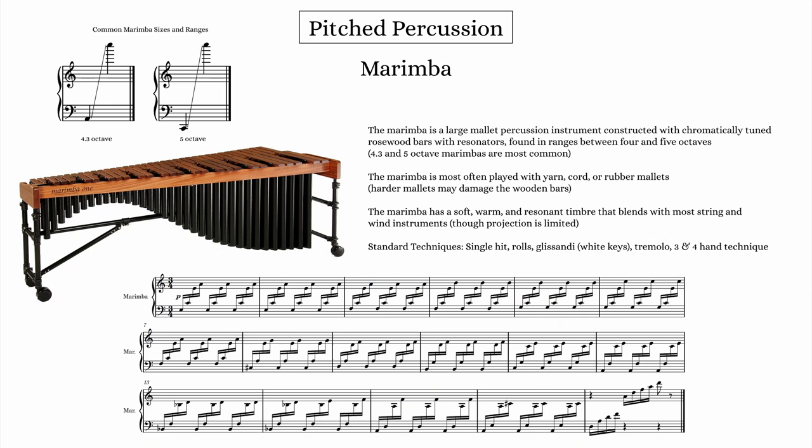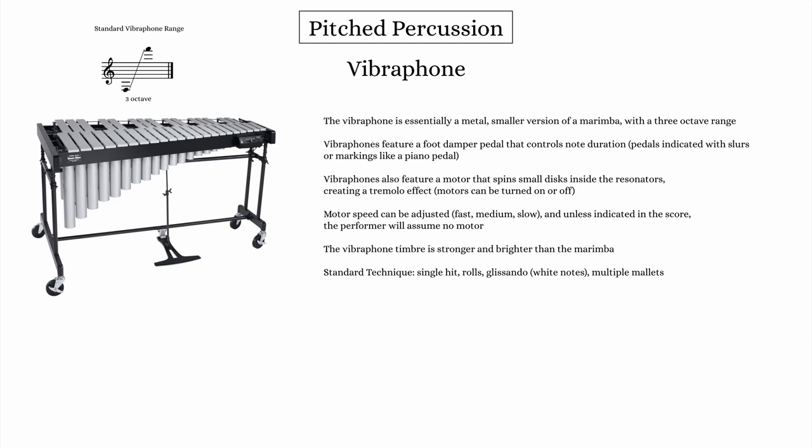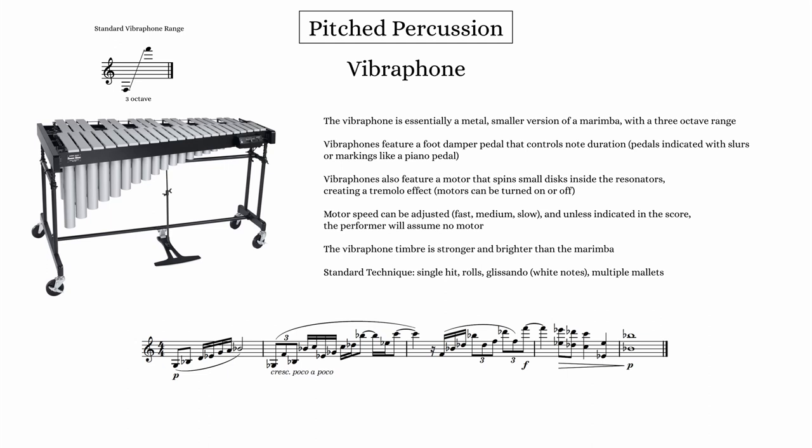The vibraphone is a similar instrument, but usually smaller in range than the marimba — about three octaves. Vibraphones are constructed with metal bars with resonators below and a foot pedal that functions similarly to the sustain pedal on a piano. Most vibraphones also feature a motor that can be turned on or off to create a tremolo effect, and the tremolo speed can be adjusted. The timbre is a bit brighter and louder than on the marimba, and with the pedal, notes can be sustained quite a bit longer.